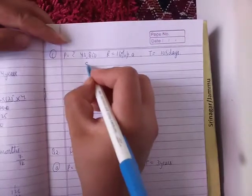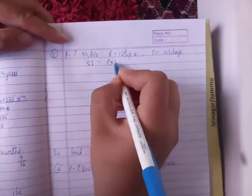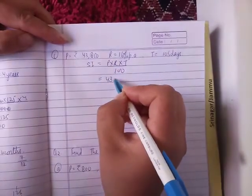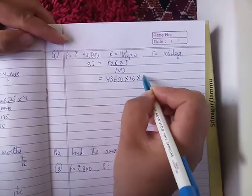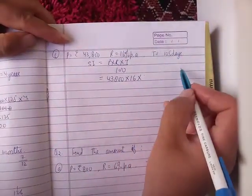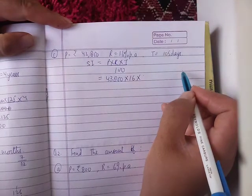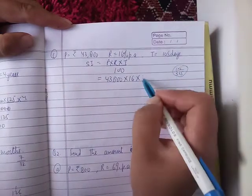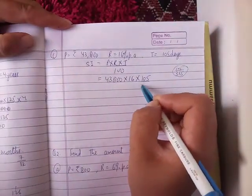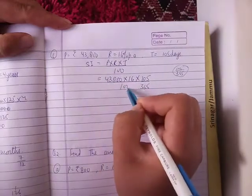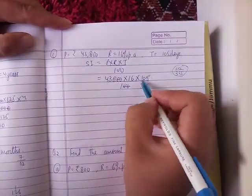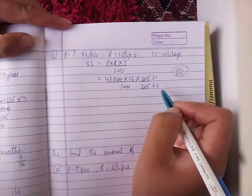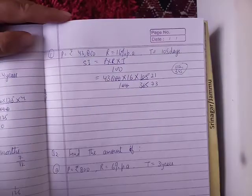Next, part C. Simple interest P into R into T upon hundred. Principal 43,800. Rate 16. Time 105 days. Total days in a year is 365. So 105 upon 365 upon hundred. Cancel zeros. Five to ten, five ones are five, five sevens are thirty-five.